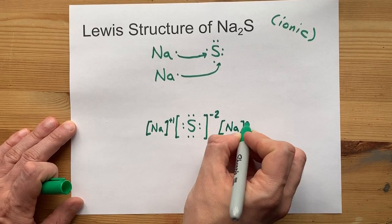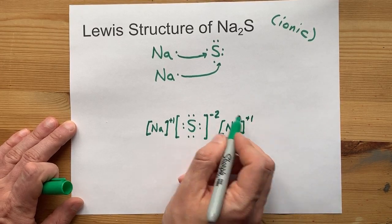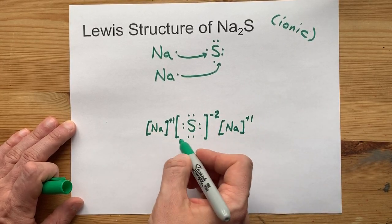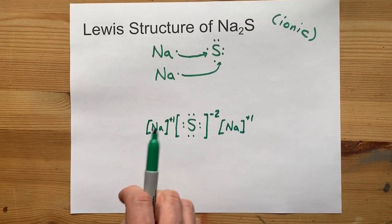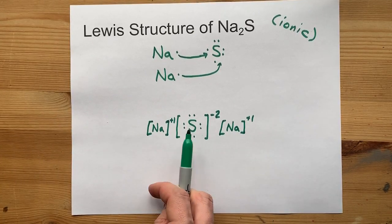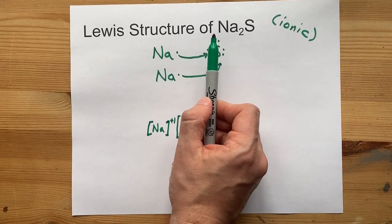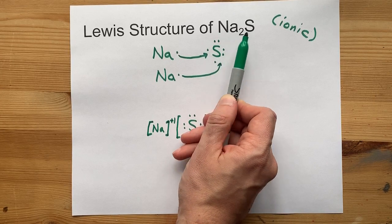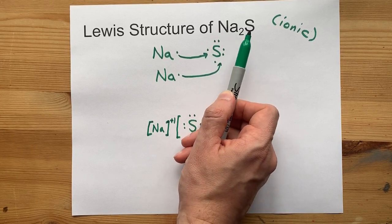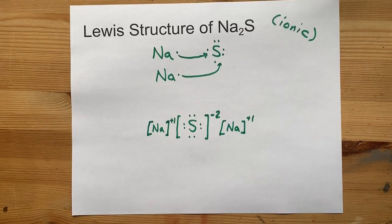after all, you needed two of them to satisfy the octet rule for sulfur, and that two sodiums per one sulfur is what give us a formula of Na₂S. See, two sodiums for every one sulfur? It's all here.